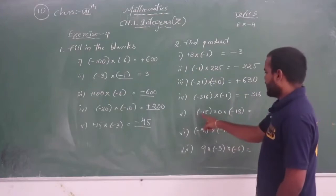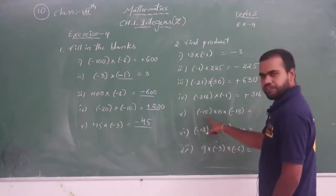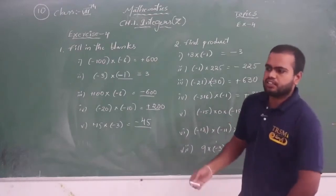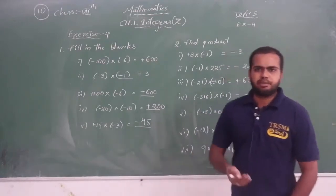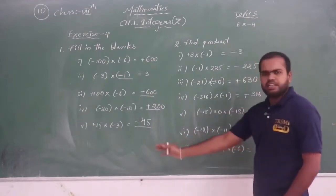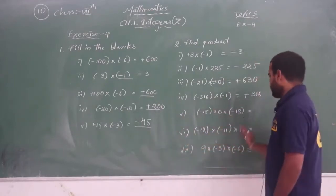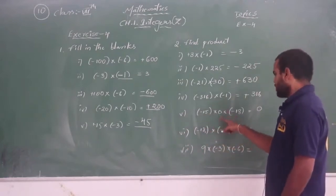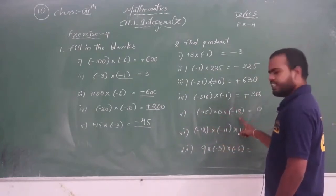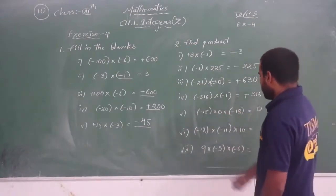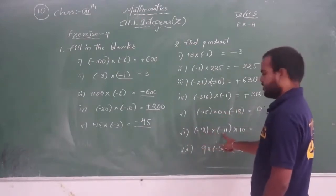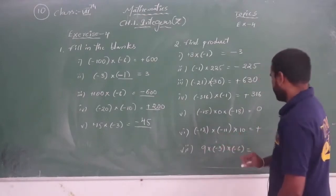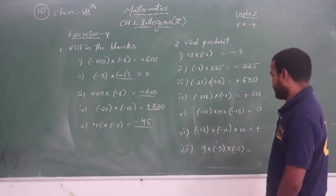Now see the fifth one: minus 15 into 0 into minus 18. We know that if you multiply 0 by any number, you get 0 only. It means 0 into however many numbers you take is still 0. So minus 15 times 0 is 0, and 0 into minus 18 is also 0. The product is simply 0.